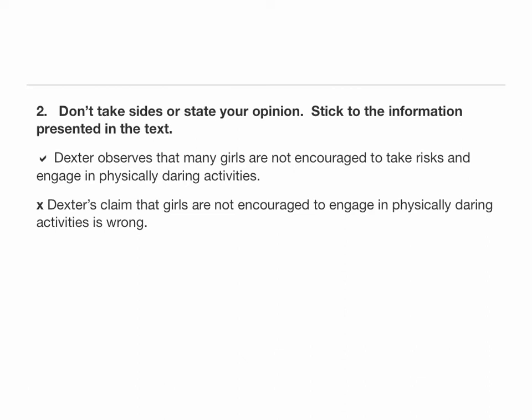Rule two: don't take sides or state your opinion — stick to the information presented in the text. A correct example: "Dexter observes that many girls are not encouraged to take risks and engage in physically daring activities." An incorrect example: "Dexter's claim that girls are not encouraged to engage in physically daring activities is wrong." When you're writing a summary, that's not the place to take sides or judge the text — you are just stating what is being said.